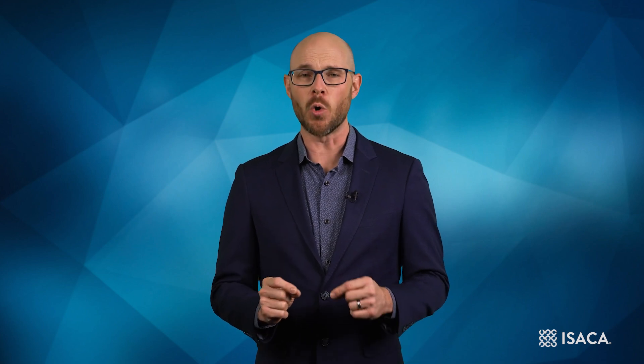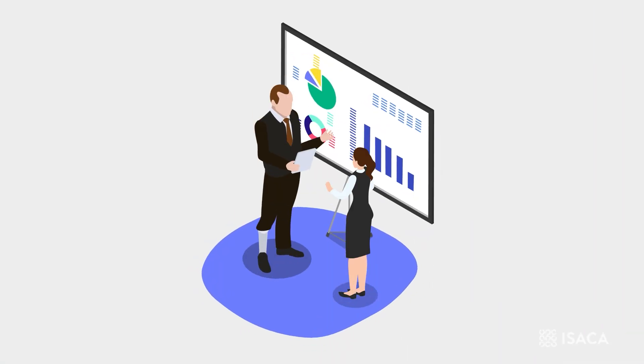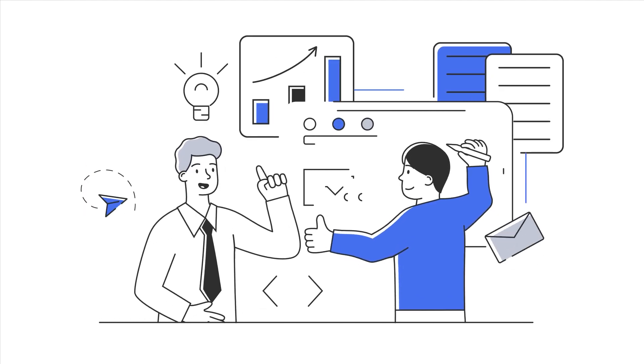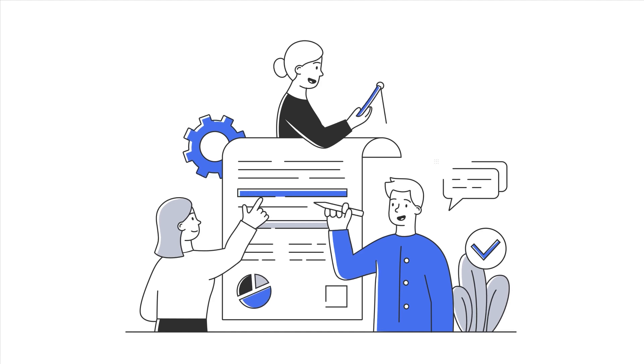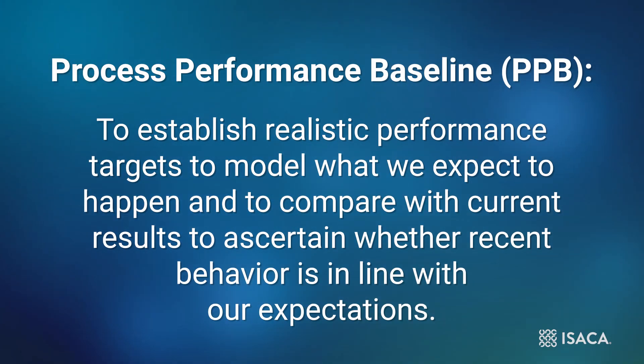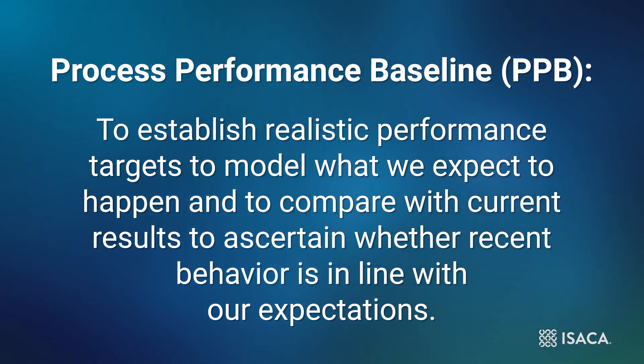This is reflected in the additional required information for SAM 4.1. In particular, the second paragraph highlights that the acquirer must statistically or quantitatively manage their own internal processes, or the supplier processes and solutions in conjunction with the supplier, when the Quality and Process Performance Objective — the QPPO — requires it. Defining specific QPPOs is not about expressing a wish of what we want to achieve, but instead is based on the historical capability of the process. This means we must collect data to establish Process Performance Baselines, or PPBs. We can then use these PPBs to establish realistic performance targets, to model what we expect to happen, and to compare with current results to ascertain whether recent behavior is in line with our expectations.